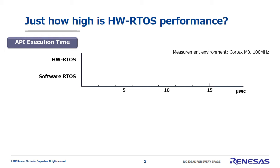We'll start with API or system call execution time. For this example, we're using a 100 megahertz Cortex-M3 and measuring using an in-house test program. The minimum time our hardware real-time OS needed was 0.90 microseconds. The maximum was 3.0 microseconds. This maximum time is the theoretical maximum value — in other words, the worst case value — for the hardware real-time OS and will never be exceeded.